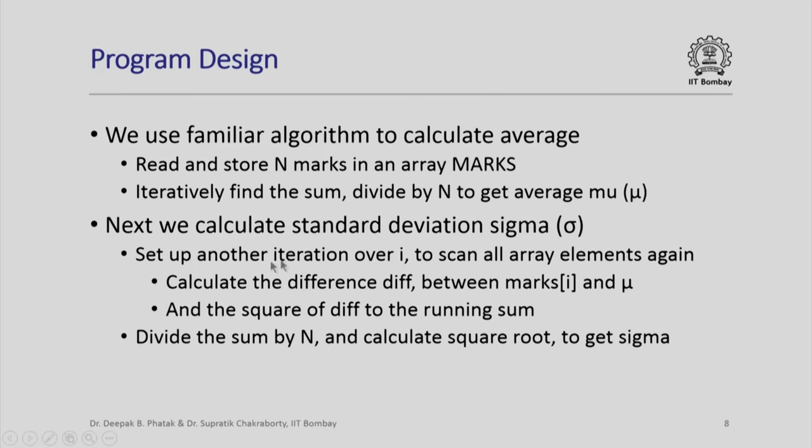Next we set up another iteration over i to scan all array elements again. Again, this time we calculate the difference diff between marks and mu, and the square of diff is added to the running sum. We divide the sum by N and calculate square root to get sigma.